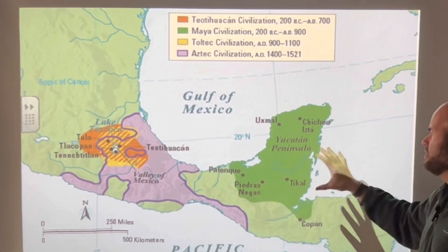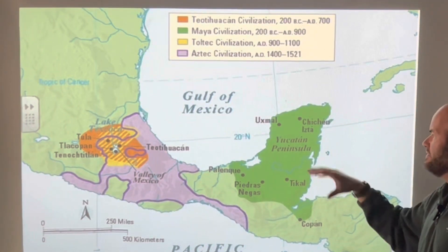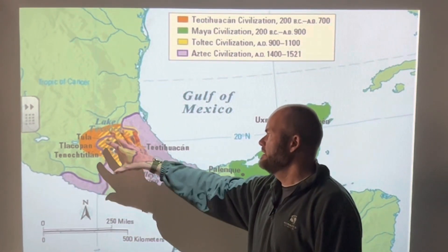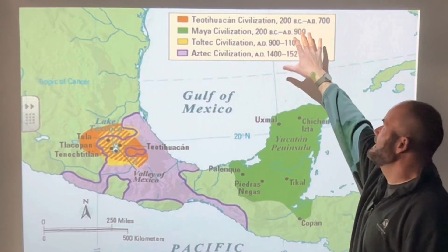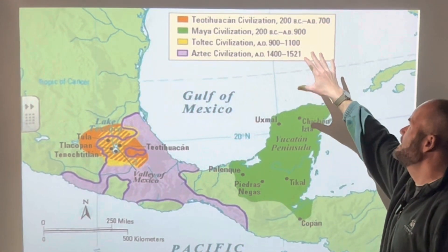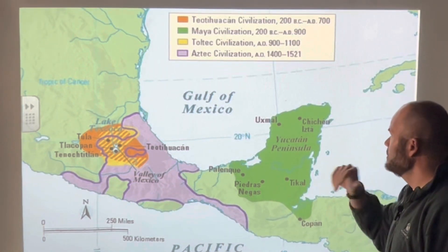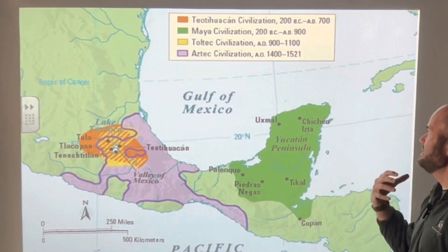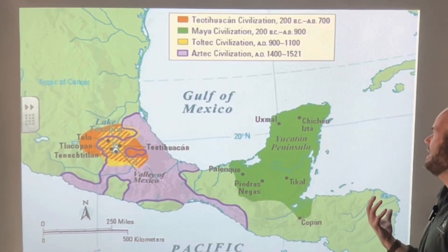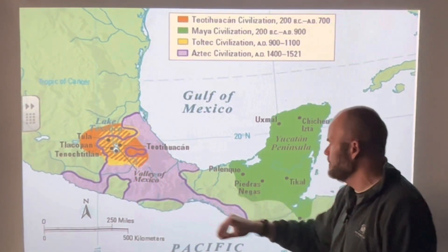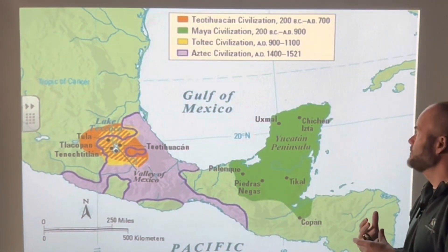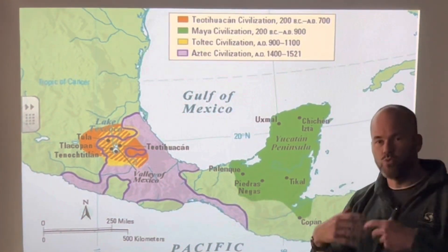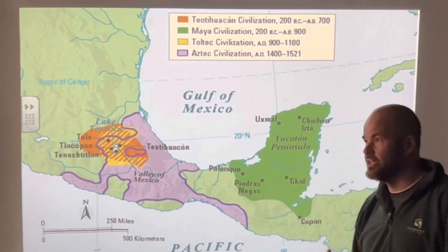This map does a great job of showing us the location of these various civilizations. The orange colors represent the area around Teotihuacan, running from about 200 BC to 700 AD. The Maya civilization is shown in dark green around the Yucatan Peninsula, at its height around 200 BC to 900 AD. The Aztec civilization is shown in purple and was in existence around 1400 to 1521 — importantly, it's in existence when the Spanish arrive, which will be a big component of our future studies.